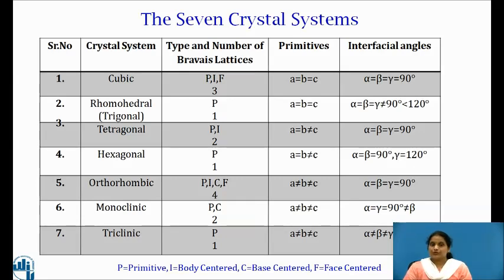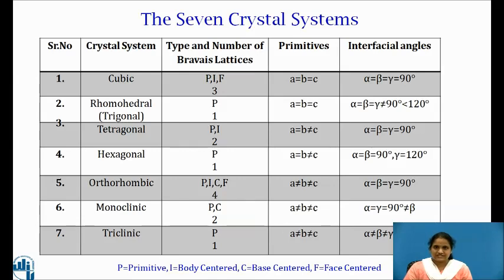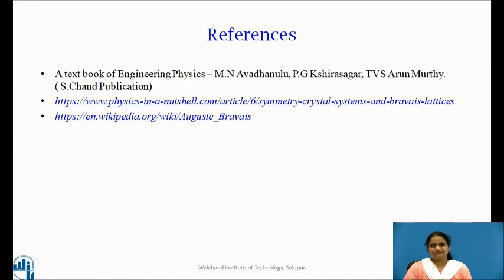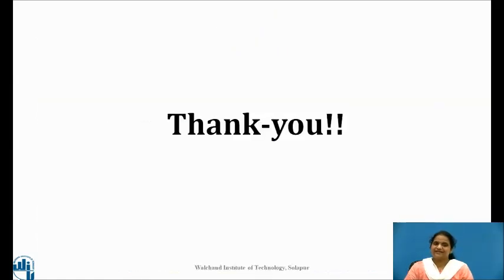In total, there are 7 different types of crystal systems, for which there are 14 Bravais lattices, of which 7 are primitive cells and 7 are non-primitive cells. For cubic, all the lengths and angles are the same, and for triclinic, all angles and lengths are different. Thank you.